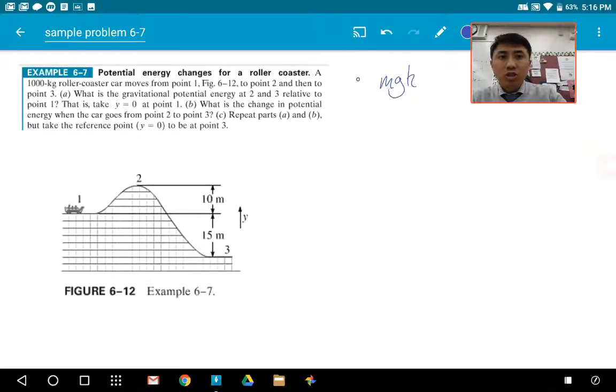MGH, meaning gravitational potential energy, meaning the potential energy of raising something up. Like if you lift something up, it wants to fall down, right? So it's holding potential energy. The formula for that is MGH, mass times the acceleration of gravity times height.